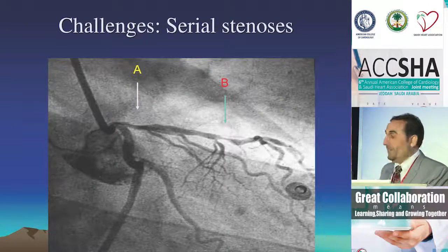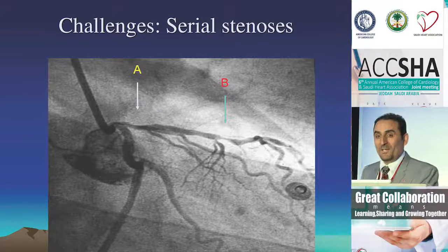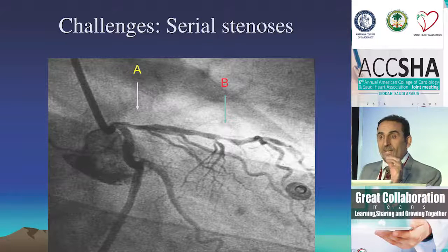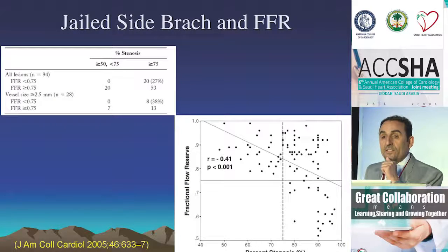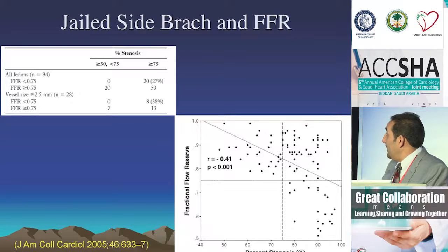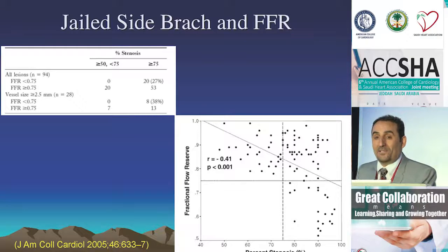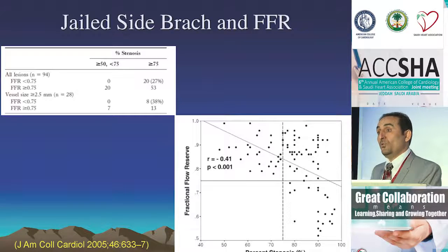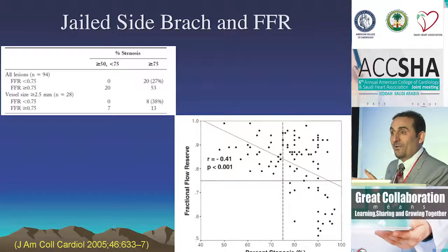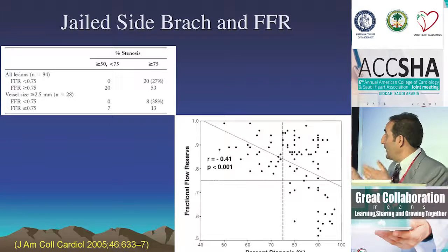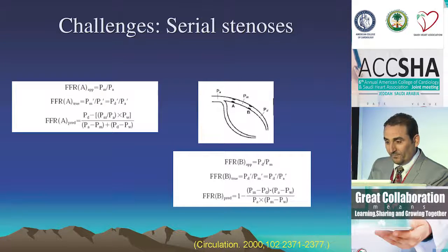What about the side branch? Dr. Gazzal showed a case — he wasn't worried about the side branch. Most side branch lesions look very ugly at the ostium after stenting the main vessel, but does that mean they have significant stenosis? Actually, only one-quarter of those appearing to have more than 75% stenosis after main vessel stenting had an FFR less than 0.75. Those appearing less severe — almost zero had significant FFR. So you don't need to prolong the procedure. Just leave those alone; if FFR is more than 0.8, you're fine.